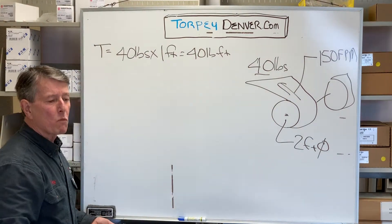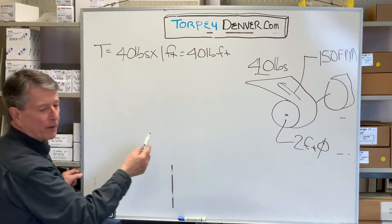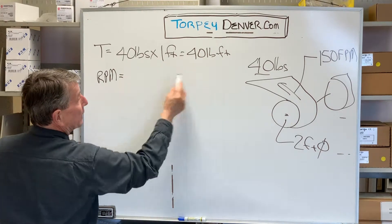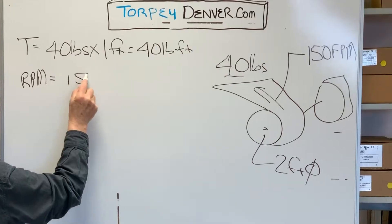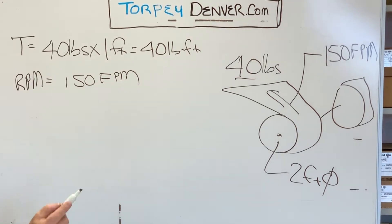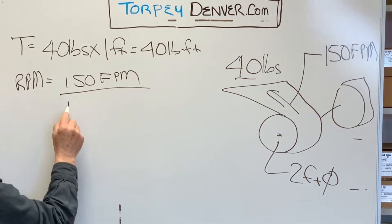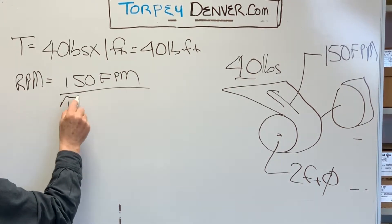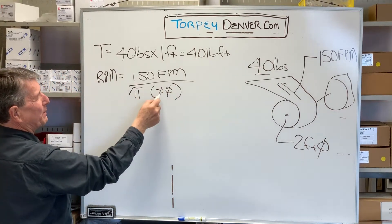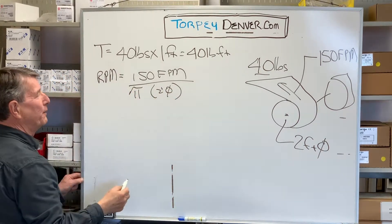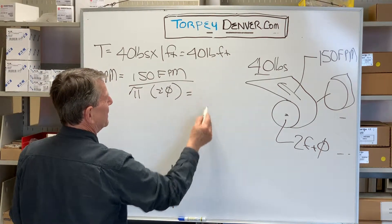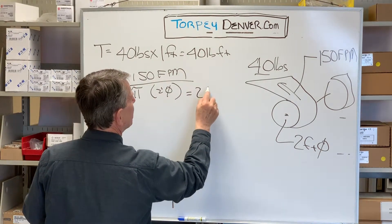Next step: what's the RPM? RPM equals your feet per minute — 150 feet per minute — divided by pi times the diameter. So pi times the diameter into 150, and that's going to equal about 24 RPM.